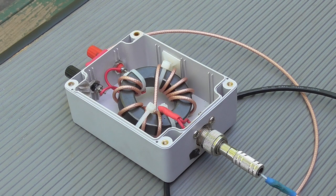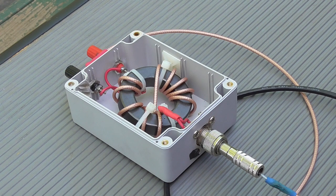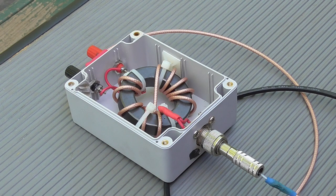Just as a reminder, the 1-to-1 current baluns provide a high impedance common mode suppression so that the shield on your coax from your transmitter doesn't radiate.